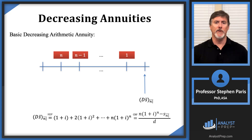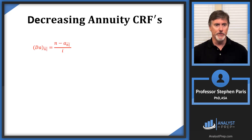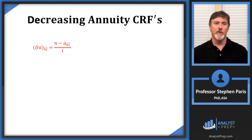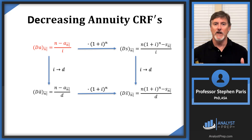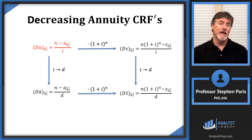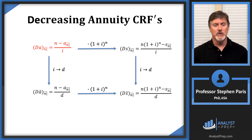Let's talk about the closed-form formulas. This is the only one you really need to memorize — you can get the others from this one in the same way we did for basic annuities and increasing annuities. To go from the non-double-dot formulas to the double-dot formulas, replace the I in the denominator with D. To go from the A formulas to the S formulas, multiply by one plus I to the N. Take a look and make sure you agree and understand what's going on.